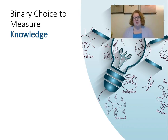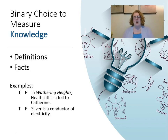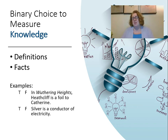Binary choice items can measure knowledge — definitions and facts. For example, 'In Wuthering Heights, Heathcliff is a foil to Catherine' or 'Silver is a conductor of electricity.' These don't have to be easy — you still need to understand a lot about Wuthering Heights — but we're really talking about definitions and facts. This is probably the best use of binary choice.